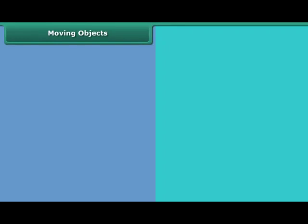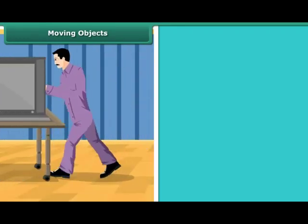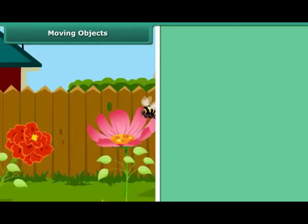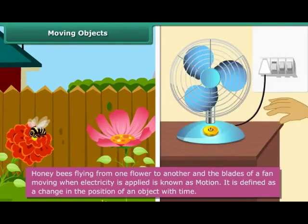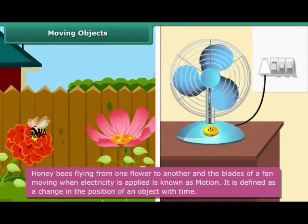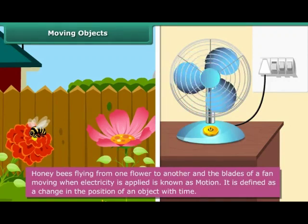Moving Objects. You will notice that there are objects that move when you apply force or are moving on their own. For example, honeybees flying from one flower to another, and the blades of a fan moving when electricity is applied. This is known as motion. It is defined as a change in the position of an object with time.